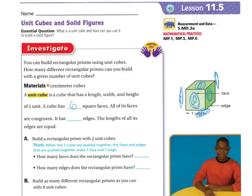A cube has 12 edges. If I were to count the edges, that's these right here: one, two, three, four, five, six, seven, eight, nine — and they're on the back, it's kind of hard to see. But if you had a dice, you'd be able to count all 12 edges.